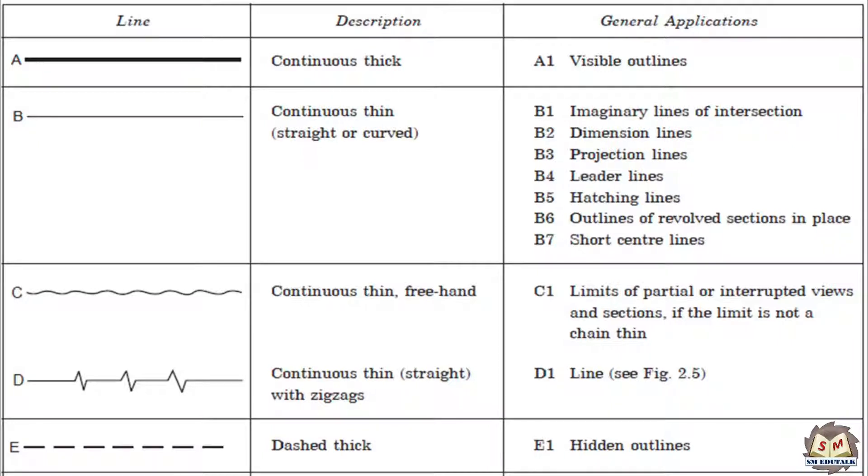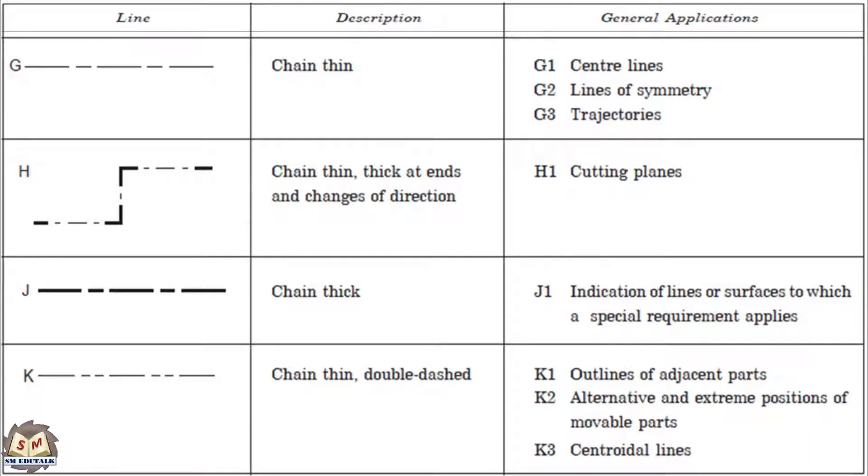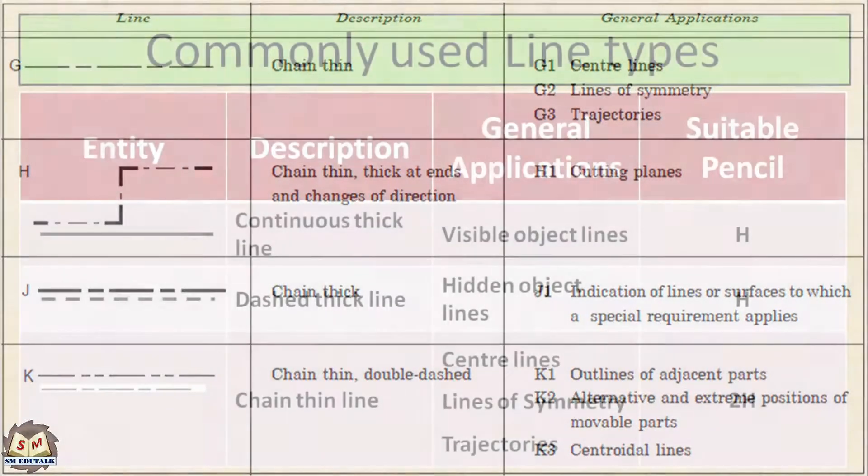1. Continuous thick line. 2. Continuous thin line. 3. Continuous thin freehand line. 4. Continuous thin with zigzag line. 5. Dashed thick line. 6. Chain thin line. 7. Chain thin thick ends and changes of direction. 8. Chain thick line. 9. Chain thin double dashed line.